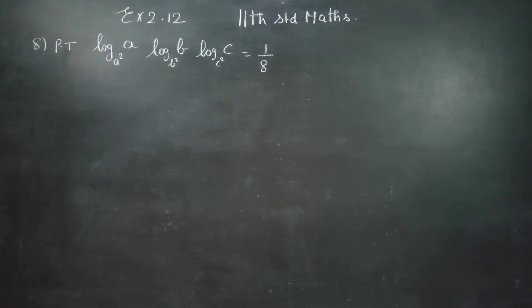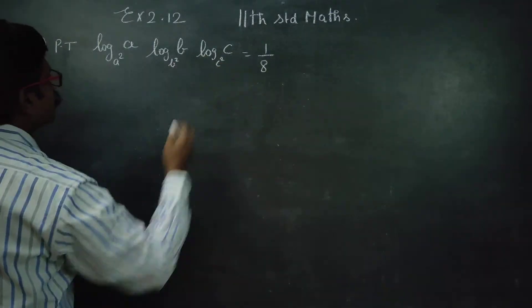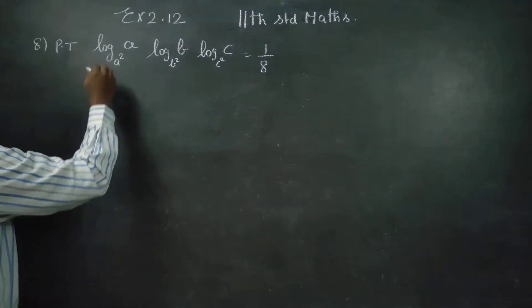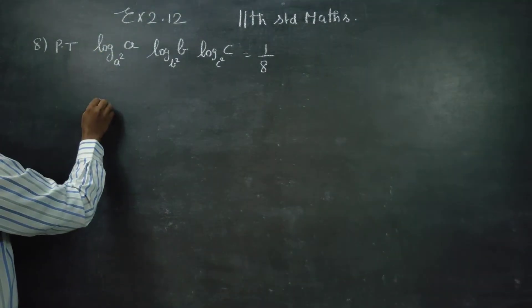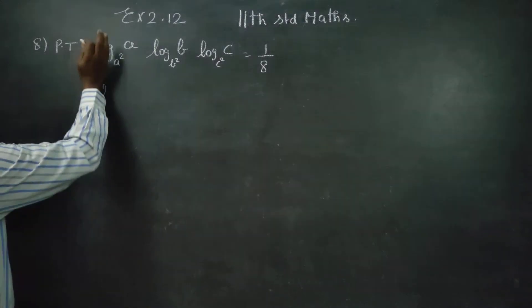Hello 11th standard students. In exercise number 2.12, sum number 8, show that the answer is 1 by 8. Stage number 1, I am going to use a rule called change of base rule.